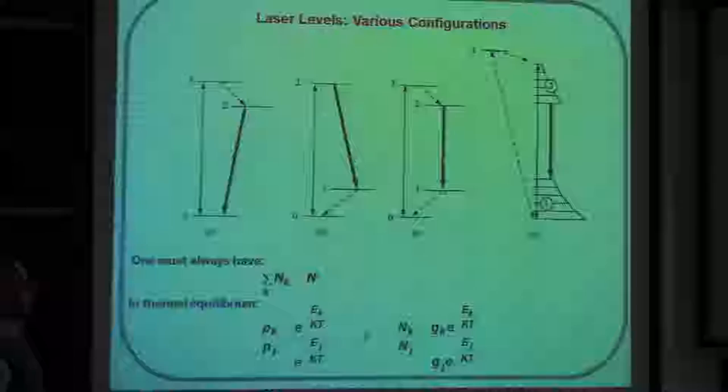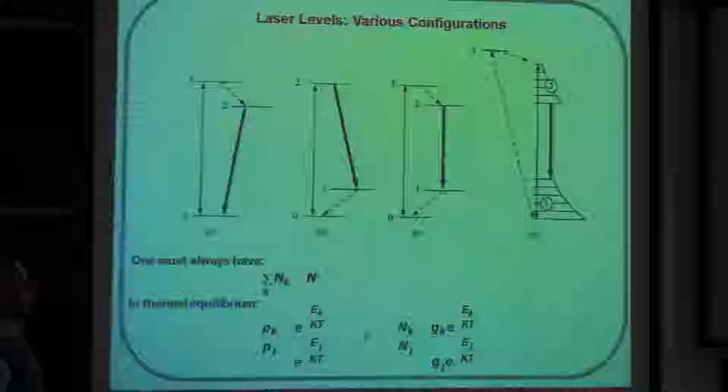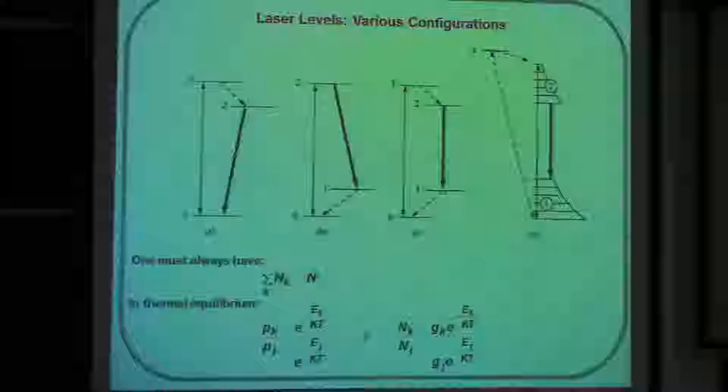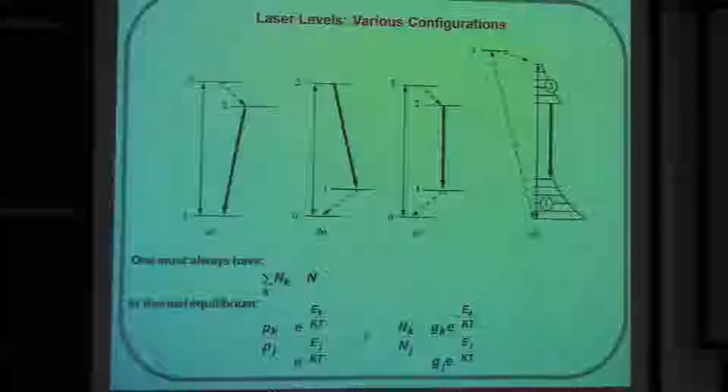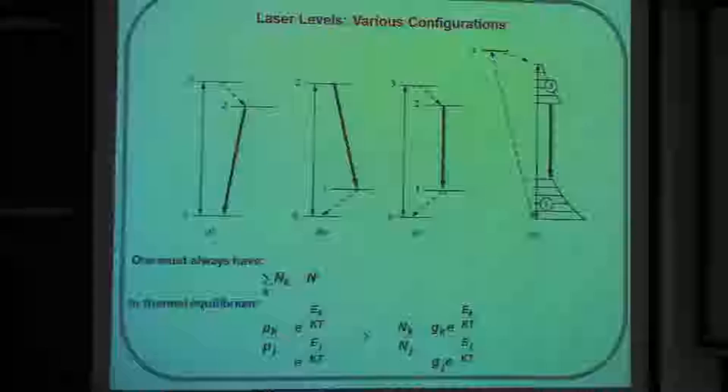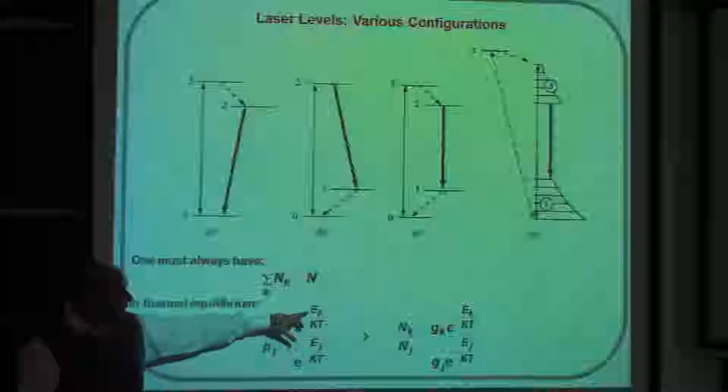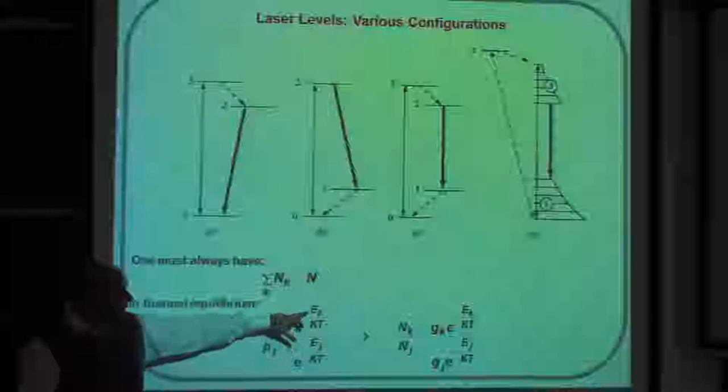If you are trying to make a laser, what you're normally worried about — especially for this kind of system — is, if you are sitting in thermal equilibrium, what's the probability of the atoms being in the zero state or one state? That probability is given by the Boltzmann factors. The probability of being in level K versus level J is in the ratio of e to the power of minus energy divided by kT.